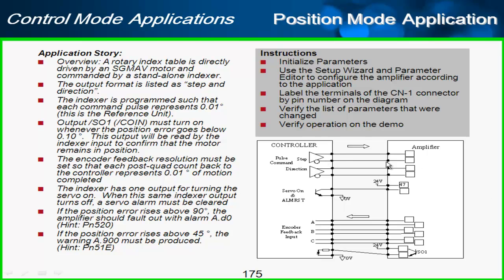So the controller is sending step and direction to the amplifier. And this indexer, this controller is programmed so that each command pulse represents 0.01 degrees. So one pulse here from the controller, the motor should go 0.01 degrees. By the way, that's called the reference unit when you are referring to the amplifier.